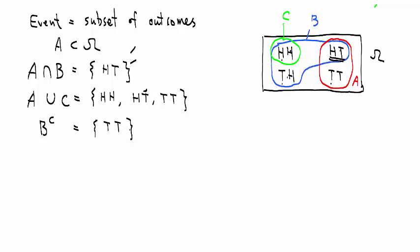There are two special events in every model. One of them is omega itself, the whole set, which includes all possible outcomes. So whatever the outcome, this event always occurs. And the complement of that is phi. This is what we use to define the empty set. That means no outcome is counted in this event.